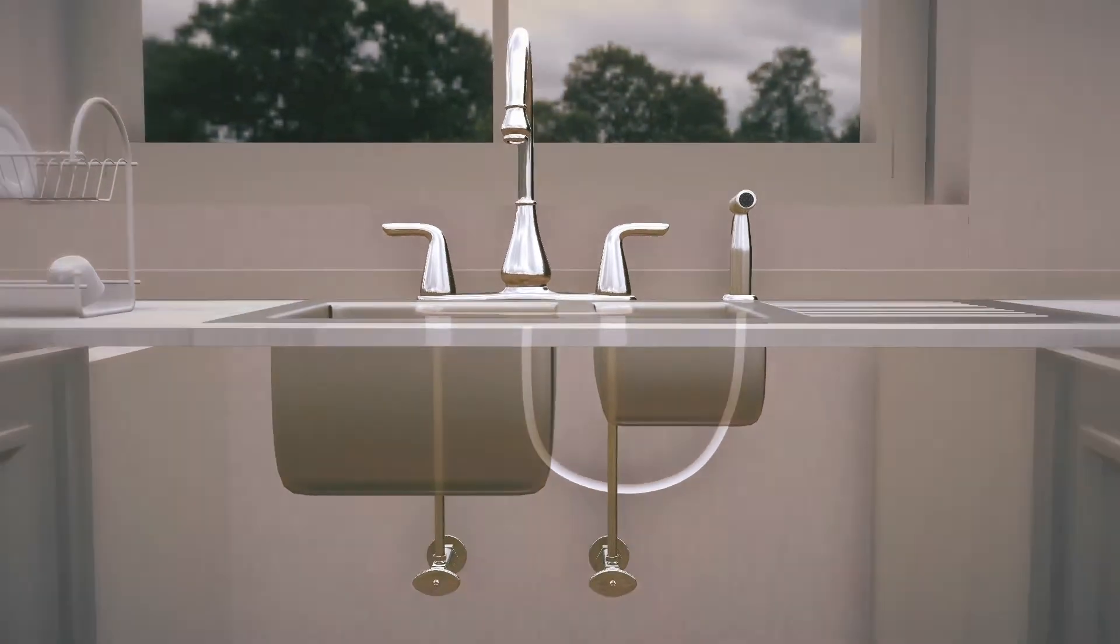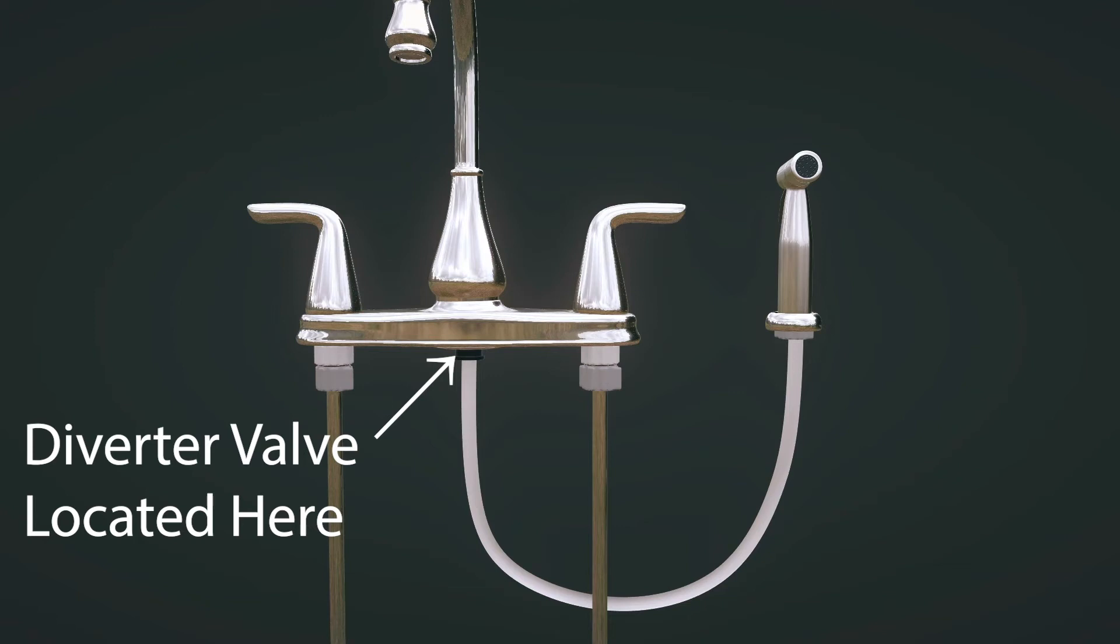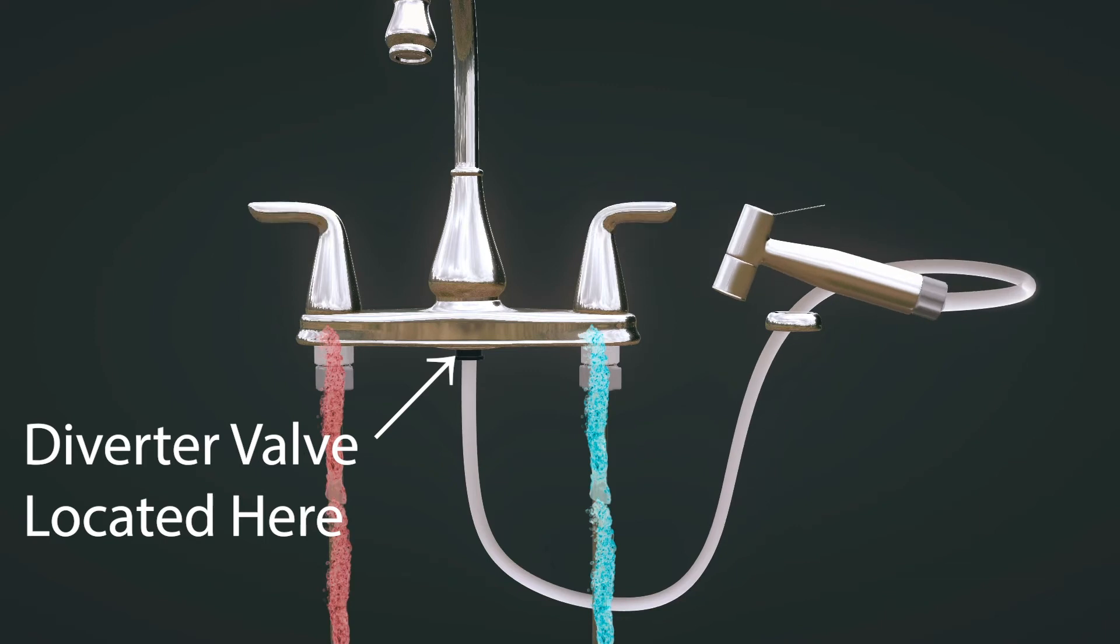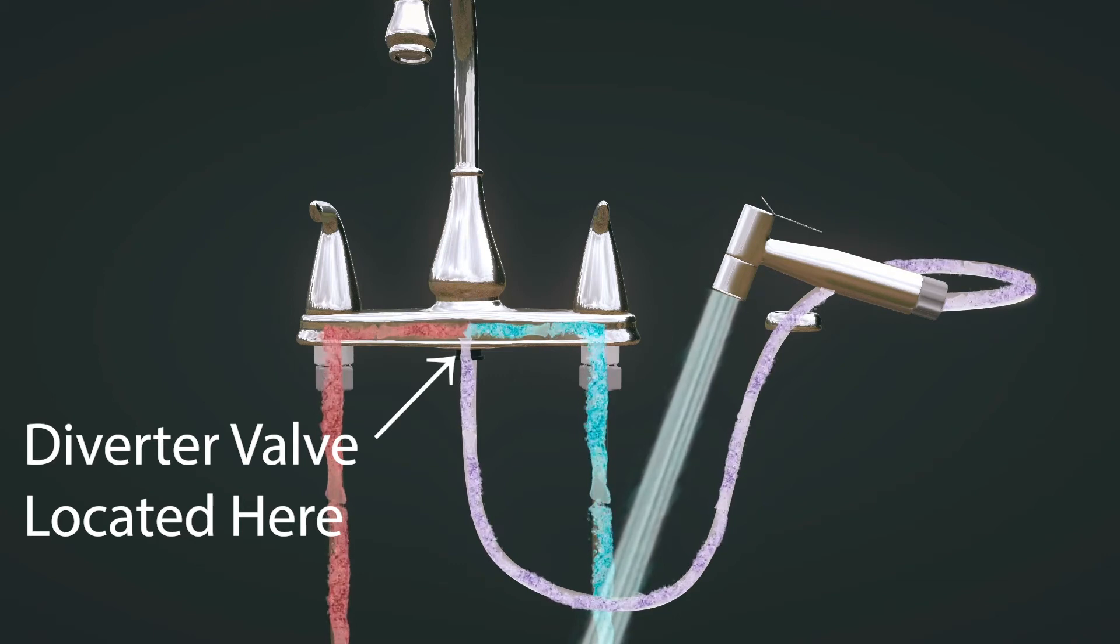Here's how the sink sprayer and faucet work together. Under the faucet is a diverter valve, located here where the sprayer hose is attached. After the faucet is turned on, the diverter valve is designed so when the sprayer button is pushed, the water pressure is automatically diverted from the faucet to the sprayer.